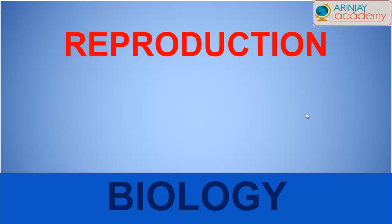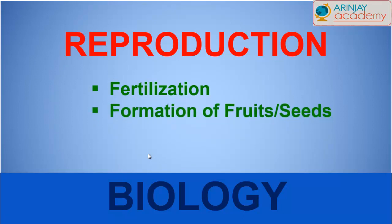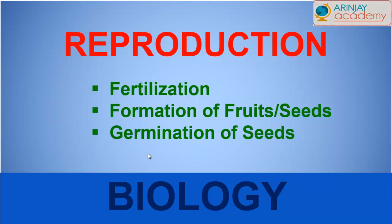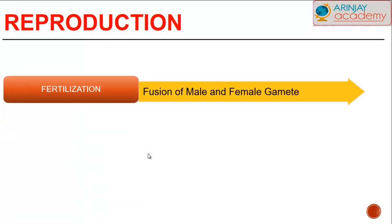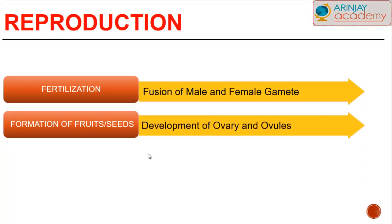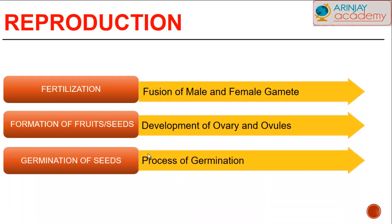We've had a look at the process of pollination. Let's now take a look at the process of fertilization and what it is, how fruits and seeds are formed, and what happens during the process of germination.